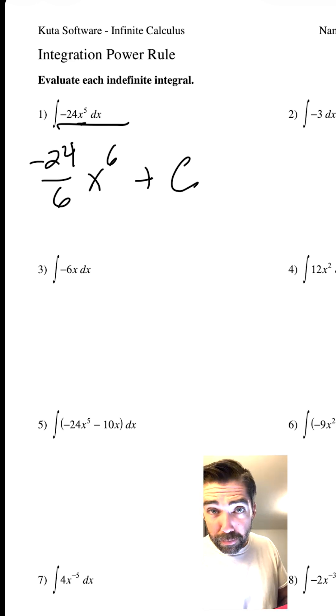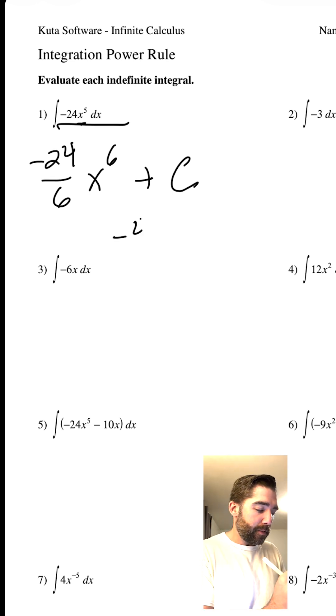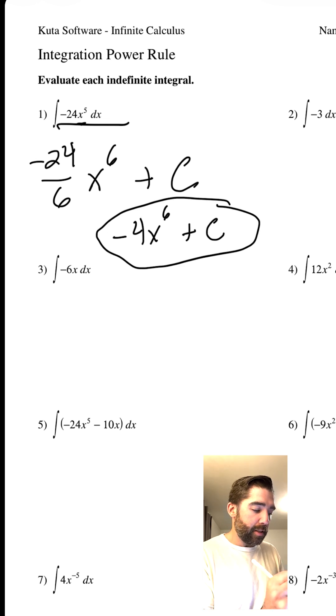But here it is. We can simplify - actually you don't need to, because they assume you can, but we will. 24 divided by 6 is 4, so we have -4x^6 + C. That is our answer. Thanks for playing, see you next time!